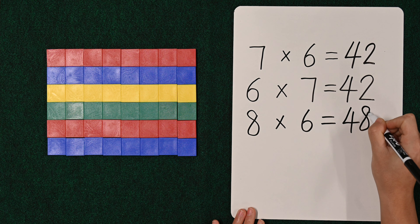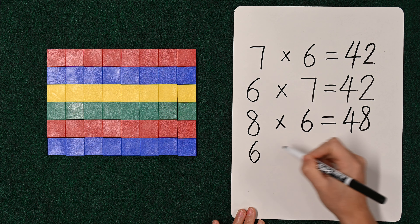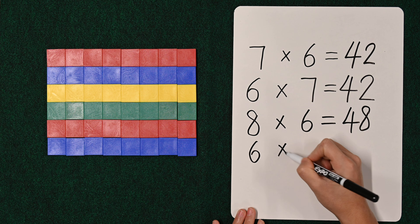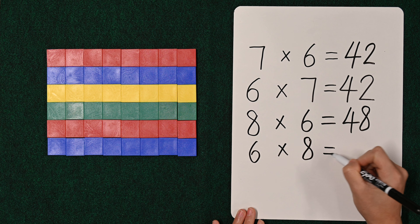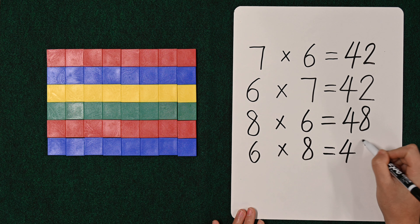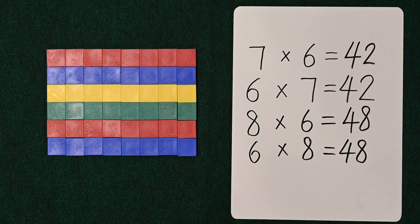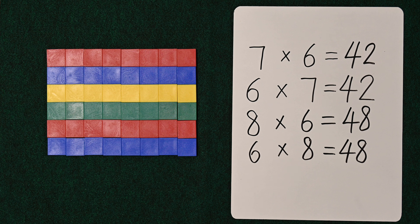And you can count it by eights or by sixes, it's going to come out. Eight sixes are forty-eight and six eights are forty-eight. Once you know that for sure, please remember to remember: six eights forty-eight, eight sixes forty-eight.